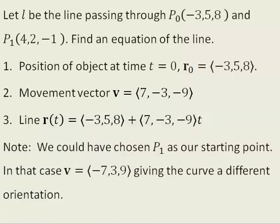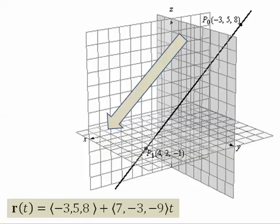Note we could have chosen p-one as our starting point. In that case, v would go in the opposite direction than the one we have chosen, giving the curve a different orientation. The orientation we chose was from p-naught to p-one.